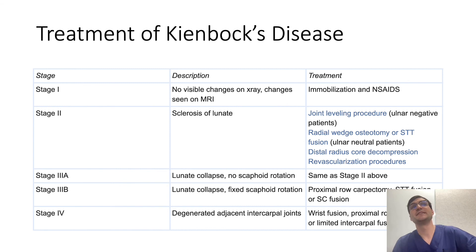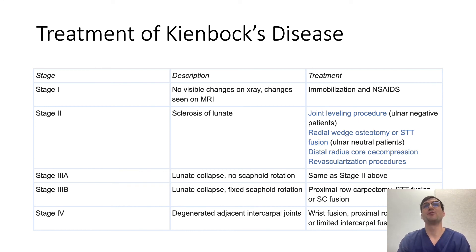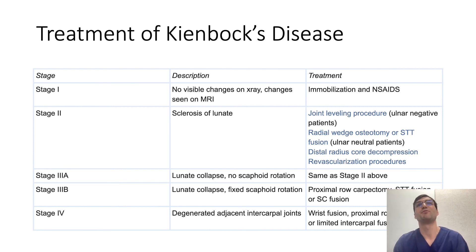In the later stages of the disease, where there is scaphoid rotation and degeneration of the other carpal bones, surgical options become more limited. You can do a proximal row carpectomy where you take out the proximal carpal bones and recreate a radiocarpal joint — this maintains some movement and is preferred over a full fusion, but isn't appropriate in many cases. The other option is a full wrist fusion.